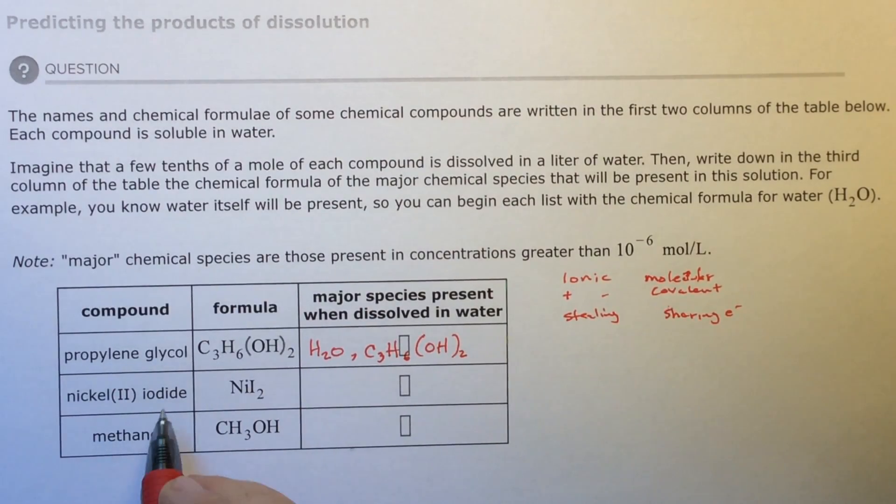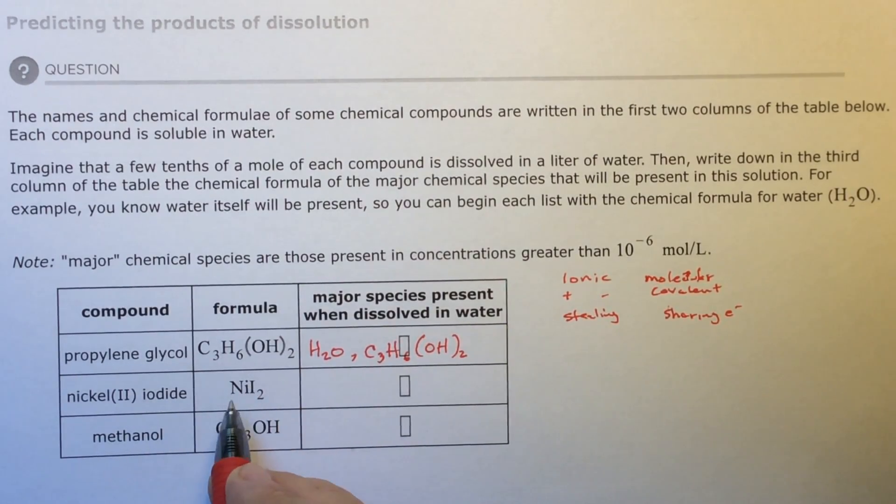What about nickel(II) iodide? Anything with a Roman numeral must be a transition metal, so it's a metal. Iodine is in group seven—that's a nonmetal. This is a metal and a nonmetal, so that's an ion. Nickel two is going to be positive two. That's what the two is for, so we know that's a cation. Iodide is going to be negative one since it's in group seven. There's two of the negative ones to balance. So these are ions.